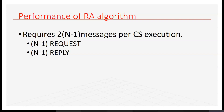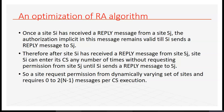Coming to the performance of the Ricart-Agrawala algorithm, it requires 2(N-1) messages because no reply is deferred separately and there is no release message — release and reply are merged together. So there are N-1 requests and N-1 replies, giving 2(N-1) messages per CS execution. Additionally, there is an optimization where SI can enter the CS multiple times without requesting again.